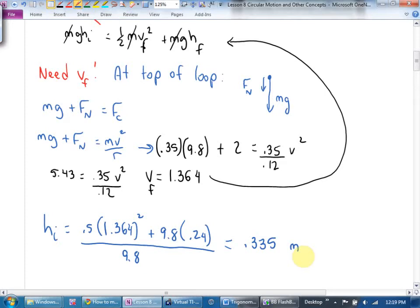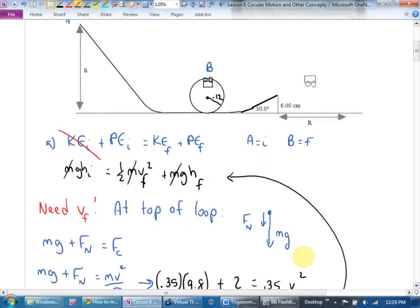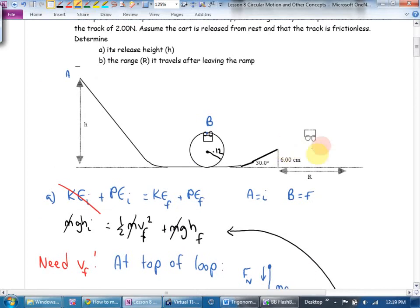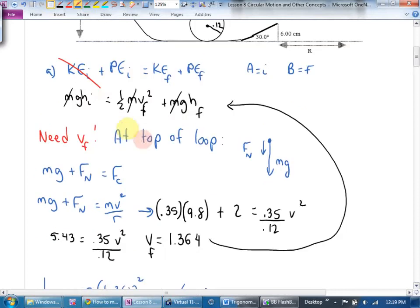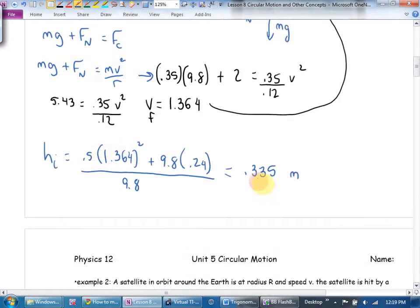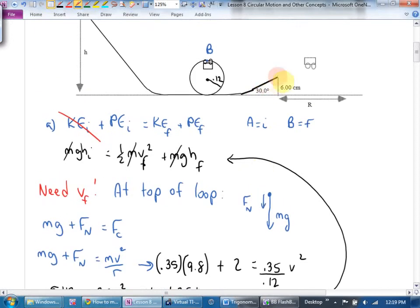Part B is nerdily cool, but we're not going to do it in the interest of time. Part B says, find the range. To do that, you would have to find the speed at the top using energies, but instead, you're trying to find V final. Your H initial would be 0.335. Your final height is 6 centimeters, and you would have an angle of 30 degrees, and we'd have a lovely projectile question. But in the interest of time, I'm going to pass.